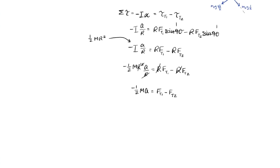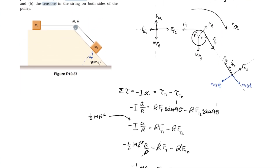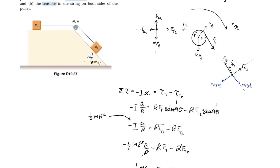We now have three unknown variables, so to solve further we need to find definitions for force of tension 1 and force of tension 2 from the individual mass systems. For simplicity, I'll label mass 1 as system 1, mass 2 as system 2, and the pulley as system 3.